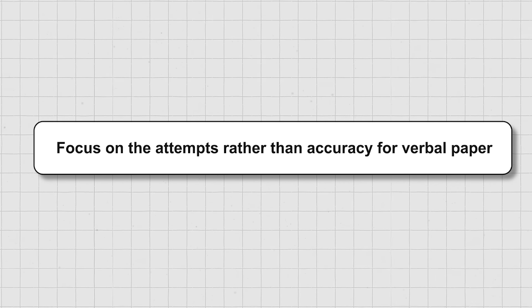Last tip है - focus on attempts rather than accuracy for verbal paper। Mocks दो different strategies से - एक बार attempts पर focus करो, एक बार accuracy पर focus करो and try it for yourself। मेरे लिए attempts पर focus करना useful था क्योंकि मैंने देखा था कि 20 questions attempt करूं तो accuracy 75% रहती है, और 34 questions attempt करूं तो accuracy around 70% रहती है। तो definitely 34 questions attempt करने में ज़्यादा फायदा है। CAT में मैंने all questions attempt किये और accuracy भी अच्छी हो गई - I scored 80 out of 102 in my verbal paper।